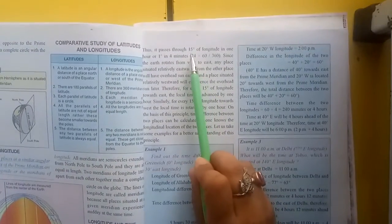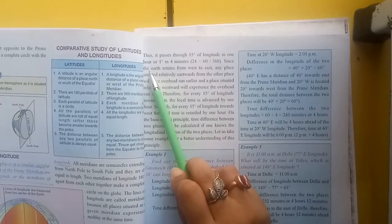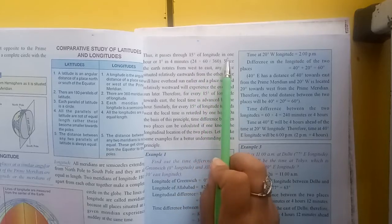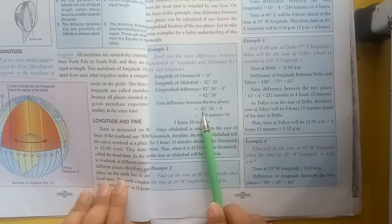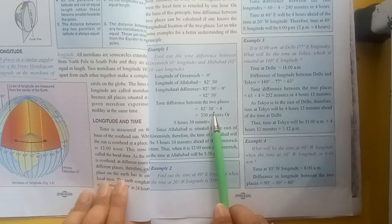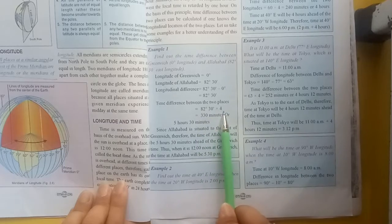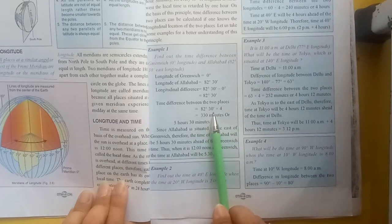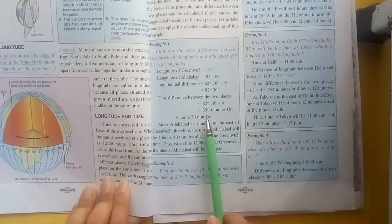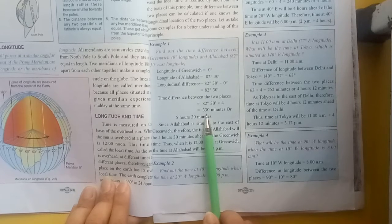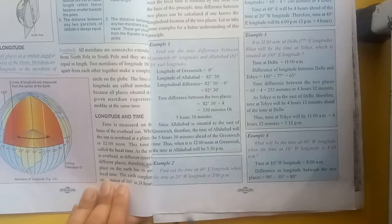We also know that 15 degrees of longitude are passed in 1 hour. Over here we also have a half degree, that is 30 minutes of arc. For 1 degree we take 4 minutes, so for half a degree we take 2 minutes. So 82 × 4 = 328, and adding 2 minutes for the half degree gives us 330 minutes total. Converting to hours: 330 divided by 60 equals 5 hours and 30 minutes.